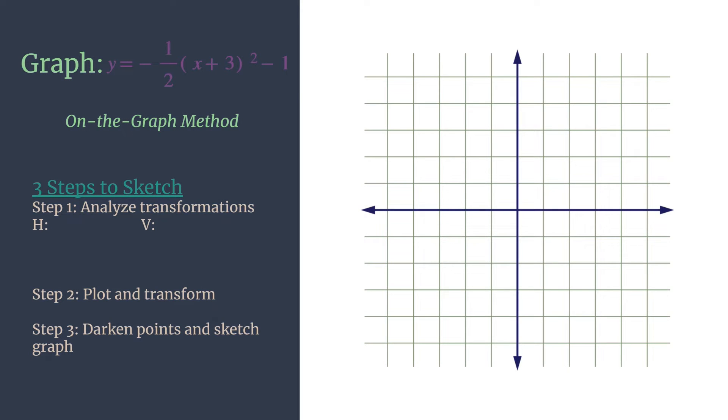All right, so we are graphing, we have our equation, our outline for our three steps to sketch method, and our grid. So remember, we are graphing a transformation on our parent function, y equals x squared. That's our parent function. And now we can jump into our transformation analysis.